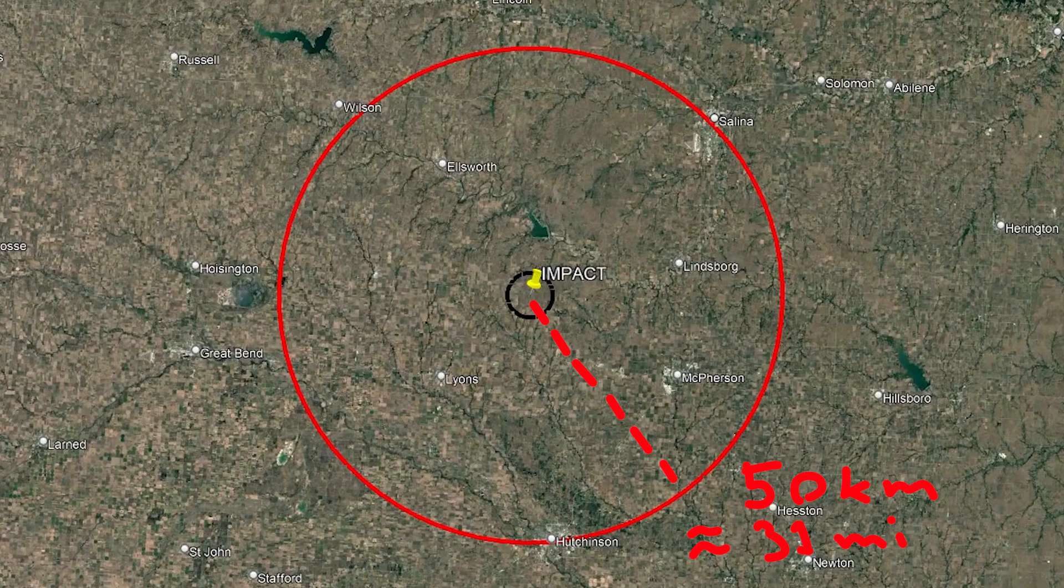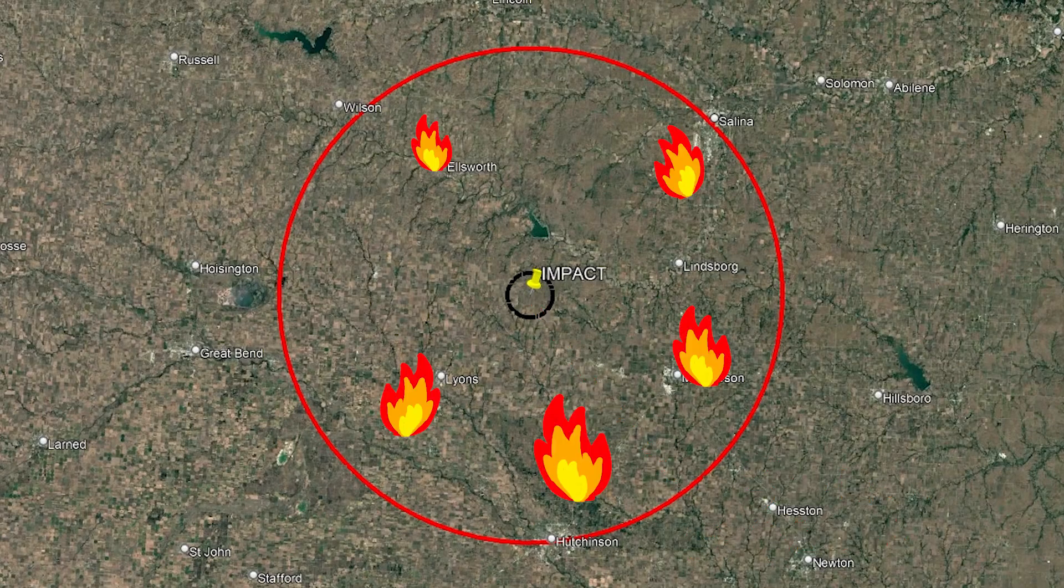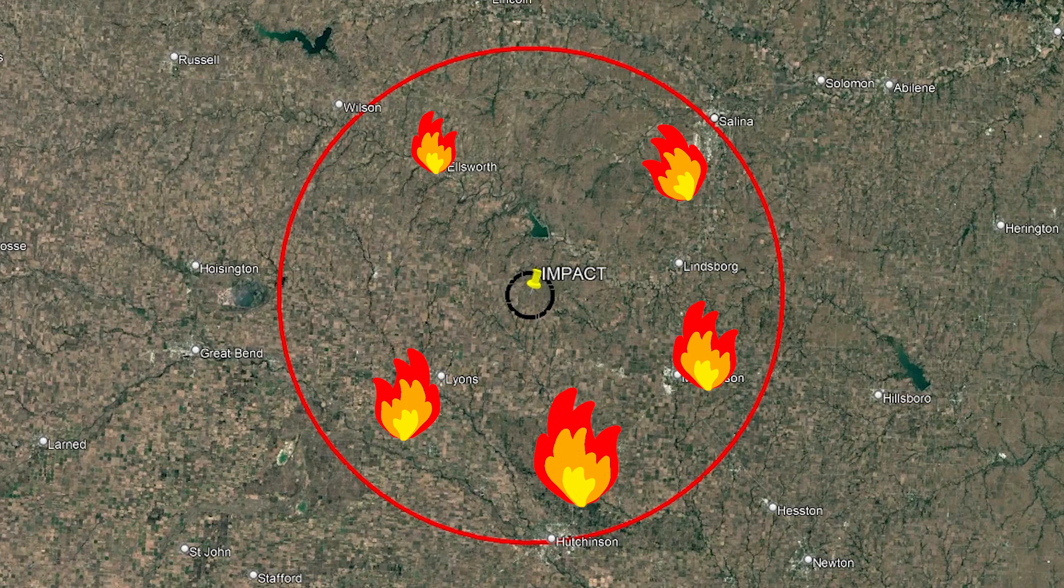Up to 50 kilometers from the impact, you wouldn't be crushed, but you'd burn to death, probably. The fireball would be 35 times larger than the sun and burn everything around you, and the air blast itself would flatten every building and every tree to the ground.